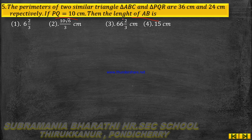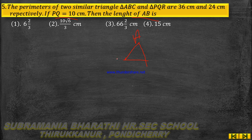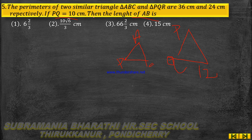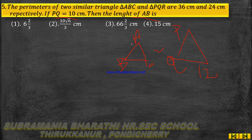So the perimeters of 2 triangles — triangle ABC and triangle PQR. For similar triangles, the ratio of corresponding sides equals the ratio of their perimeters. So AB by PQ. PQ is the length 10 cm. Therefore AB by PQ equals perimeter of triangle ABC divided by perimeter of triangle PQR.